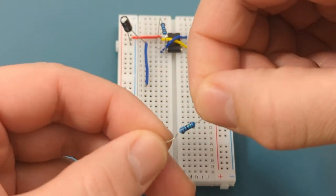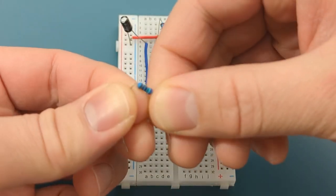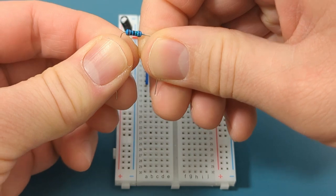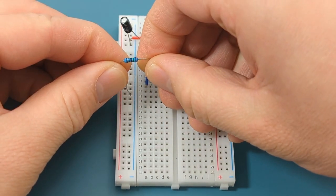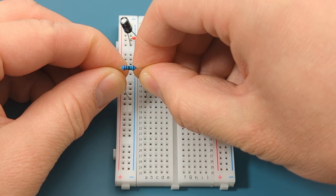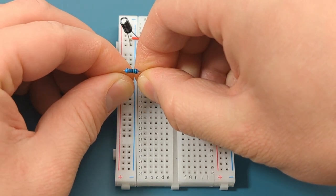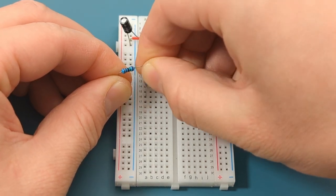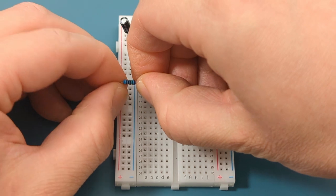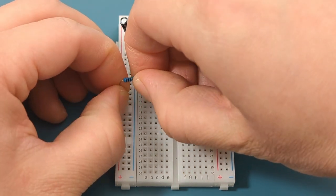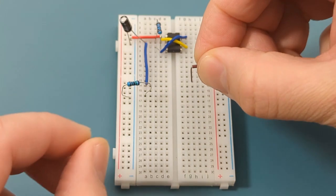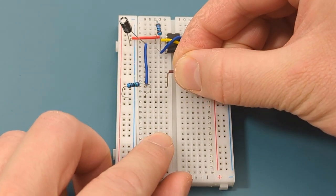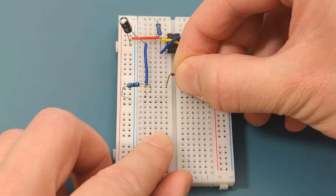Bend the ends of a 150 ohm resistor. Place the 150 ohm resistor in row 16, with one end connected to the negative rail, and the other in the same column as the previous blue jumper wire. Insert a jumper wire to connect the left and right sides of the breadboard. This jumper wire is in row 14.